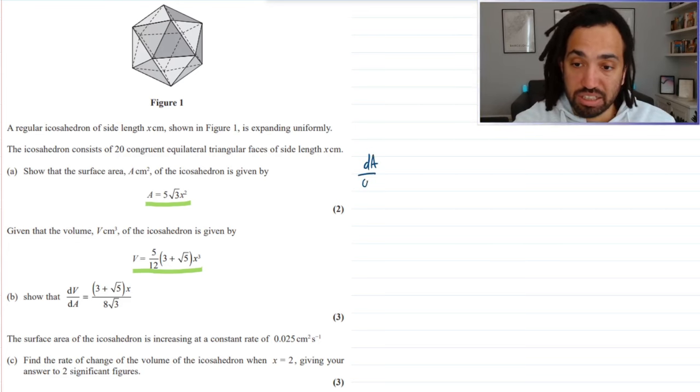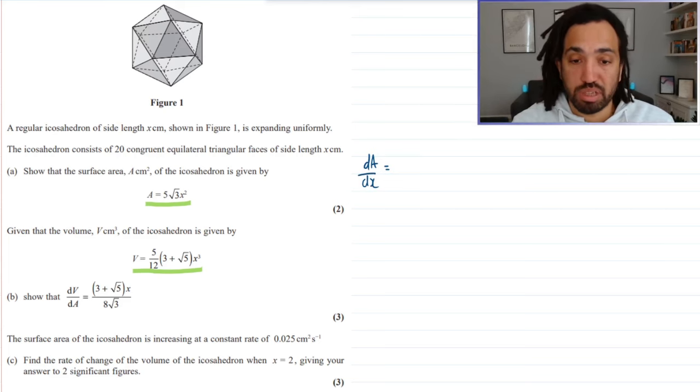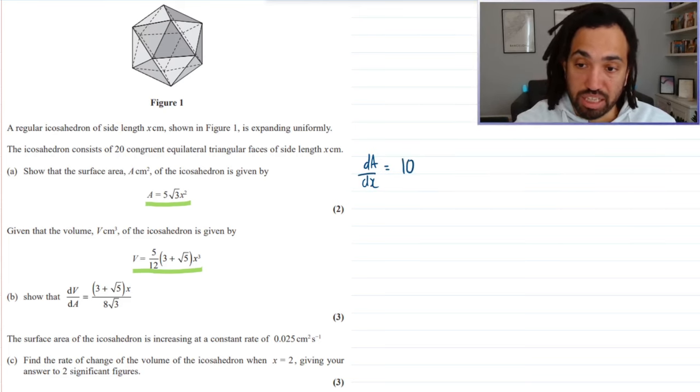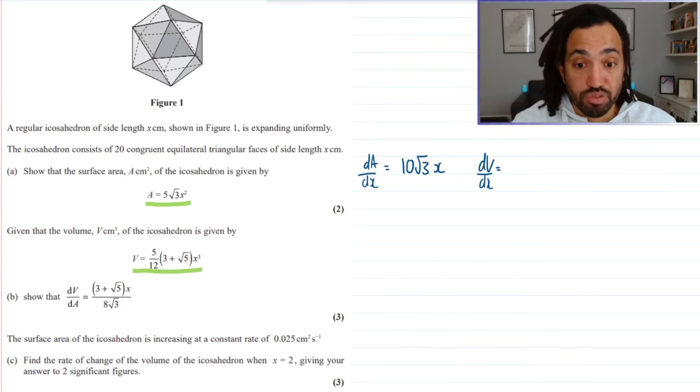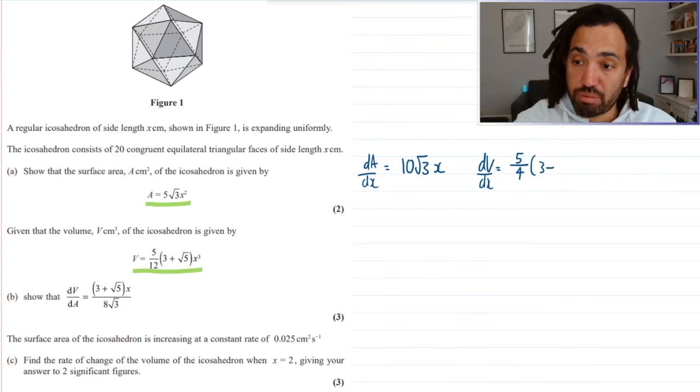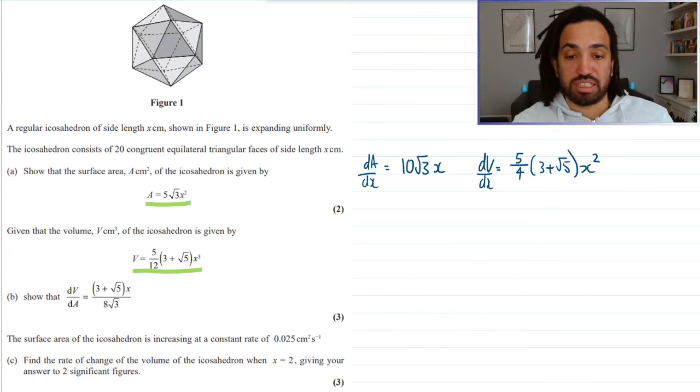So, I'm going to do dA by dx, which when I differentiate that, the 2 comes down times by the coefficient to make 10 root 3 x. And then I'm also going to find dV by dx, again, because I'm just going to differentiate this equation. So, the 3 is going to come down and multiply by this coefficient. So, I'm just going to multiply by 3, which will change that fraction to 5 over 4. And that will be 3 plus root 5. Okay, we don't need to times the bracket by 3, just times the outside fraction there by 3 is enough to times the whole coefficient by 3. And then we drop the power down, so that's x squared.